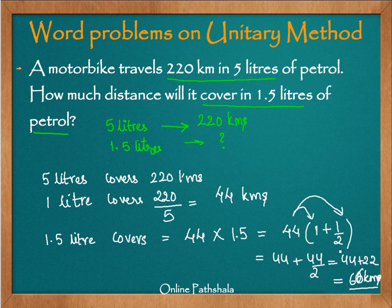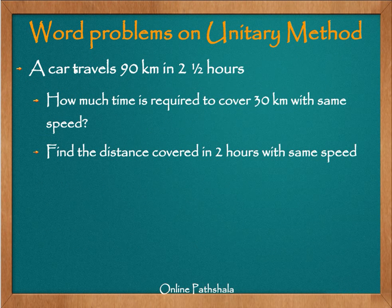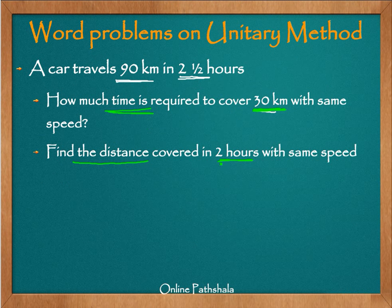Let us look at one more example. A car travels 90 kilometers in two and a half hours. How much time is required to cover 30 kilometers at the same speed, and what distance is covered in two hours at the same speed? These are two separate problems. In the first, the unknown is the time to cover 30 kilometers; in the second, the unknown is the distance given the time.